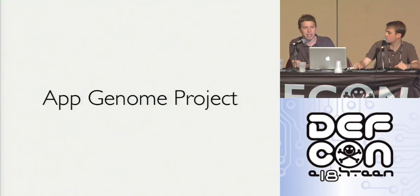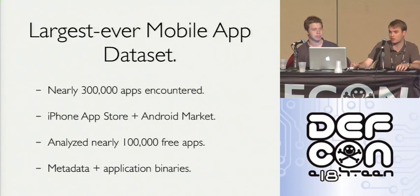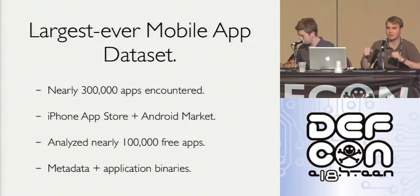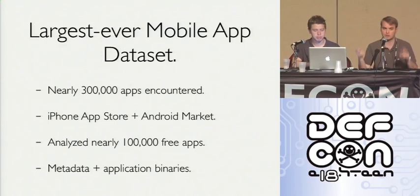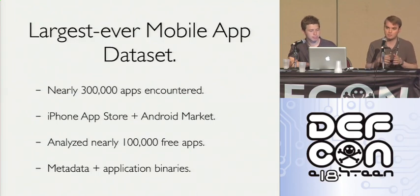So we built something we call the App Genome Project. Effectively we built an engine that allows us to crawl most of the major application environments — mainly Android and iPhone: the Android Marketplace and the iPhone App Store. We've seen about 300,000 applications, with the number growing really quickly. We've deep-dived on about 100,000 applications and built a system for automated analysis. We can look at metadata, application binaries, and create a genome of applications such that when we find one app with a certain type of behavior, we can instantly scan 300,000 apps and see what else is exploiting it in the wild — making it a super powerful security response tool.